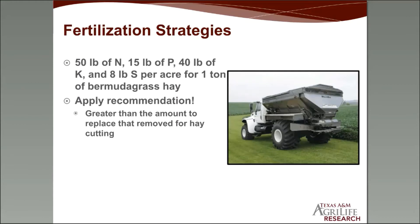If you're making bermudagrass hay and pull off one ton per acre, you've removed 50 pounds nitrogen, 15 pounds phosphorus, 40 pounds potassium, and 8 pounds of sulfur. That's why it's important to follow the recommendation — you want to replace what you're taking off. You may also need to apply greater than the amount taken off in order to increase your yield for the next cutting or next year.